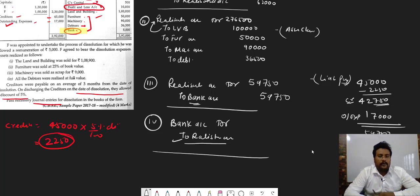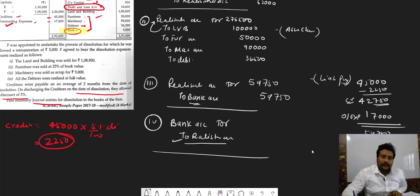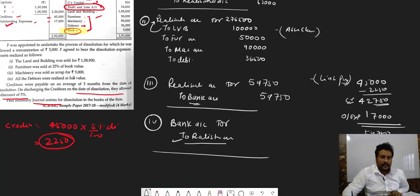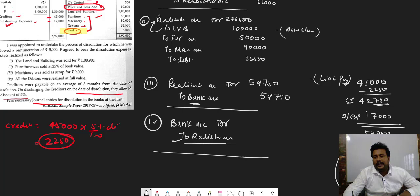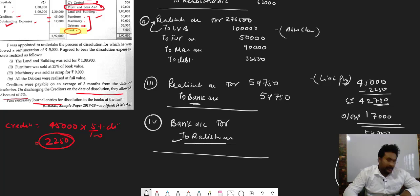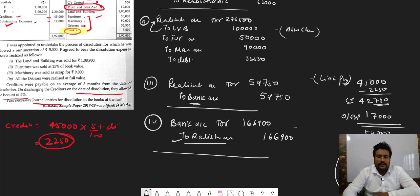Furniture was sold at 25% of book value: 50,000 × 25% = 12,500. Machinery was sold at scrap for 9,000. All debtors were realized in full: 36,500. Total assets realized: 1,89,000 + 12,500 + 9,000 + 36,500 = 2,28,900. Wait — land and building was 1,89,000. Total comes to 1,66,900. This is the assets realization entry: bank account debit to realization 1,66,900.